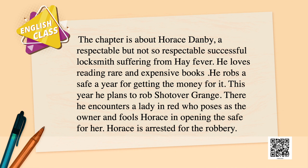I hope you all have watched Part 1 of the series and read the chapter. If not, please go back and watch it. However, I will repeat the summary for your help. The chapter is about Horace Danby, a respectable but not-so-respectable successful locksmith suffering from hay fever. He loves to read rare and expensive books and robs a safe every year to fund it. This year he plans to rob Shotover Grange, where he encounters a lady in red who poses as the owner and fools Horace into opening the safe for her. Horace is arrested for the robbery.